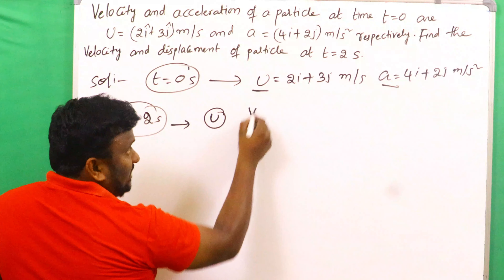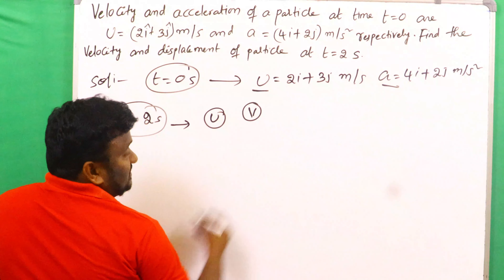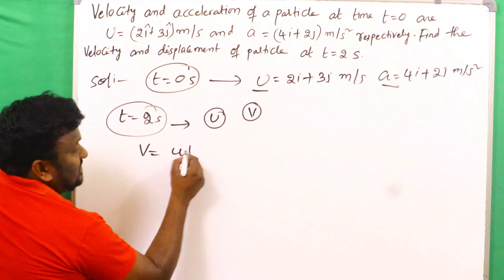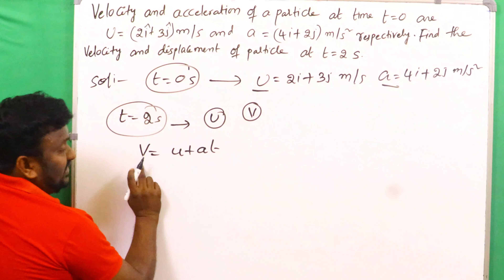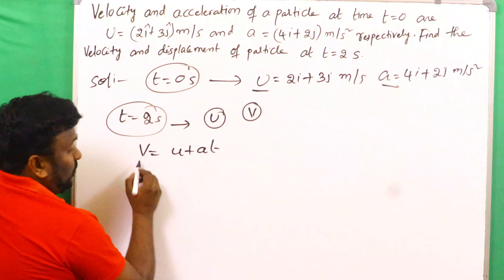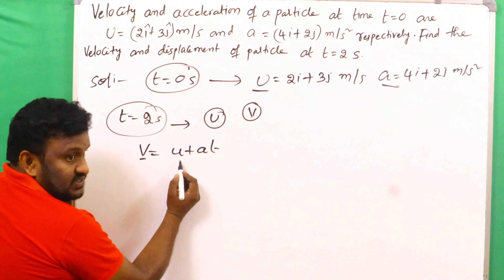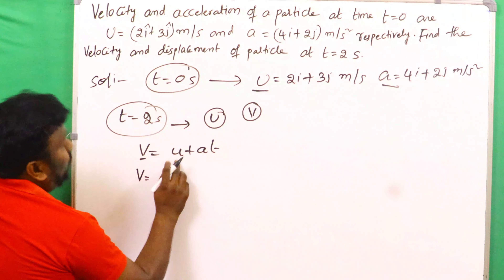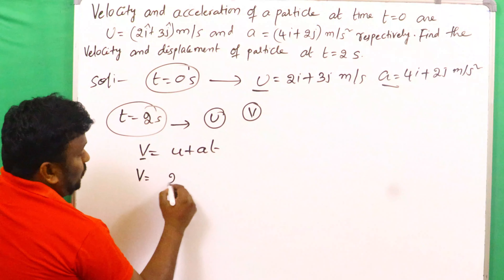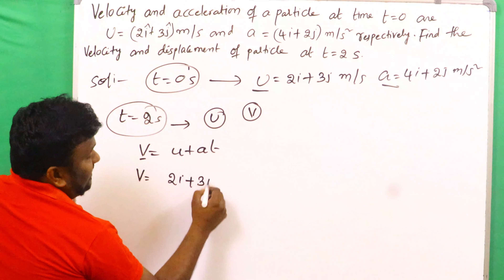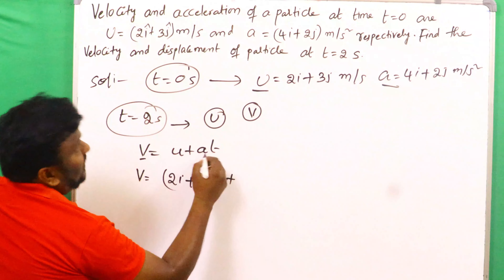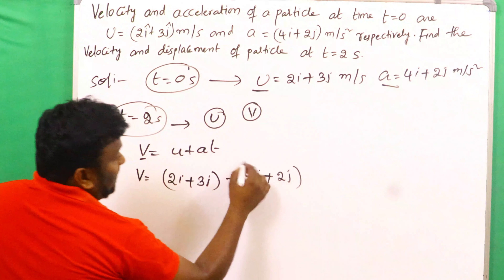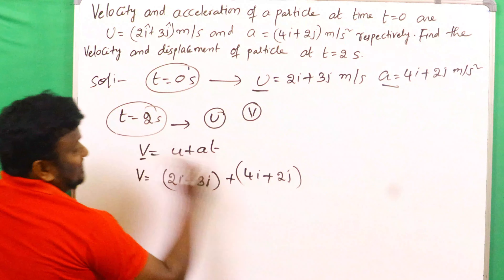When u is the initial velocity and v is the final velocity, we use the equation v equals u plus at. So here, v equals initial velocity 2i plus 3j, plus acceleration 4i plus 2j, multiplied by t equals 2 seconds.